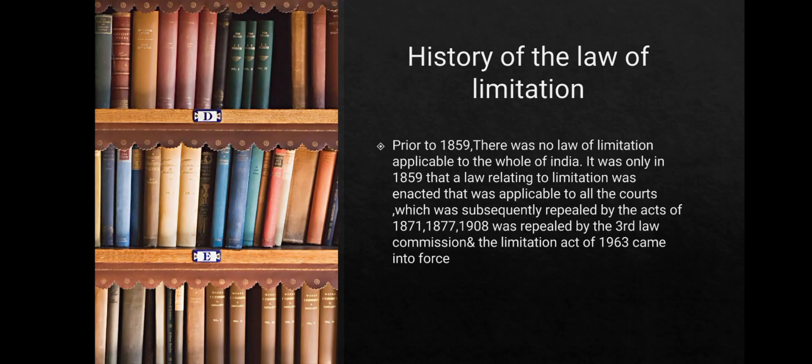We will study the history of the law of limitation. Prior to 1859, there was no law of limitation applicable to the whole of India. It was only in 1859 that a law relating to limitation was enacted that was applicable to all the courts, which was subsequently repealed by the Acts of 1871, 1877, and 1908. The Limitation Act 1908 was repealed by the Third Law Commission and the Limitation Act of 1963 came into force.